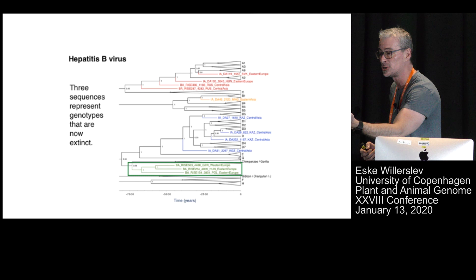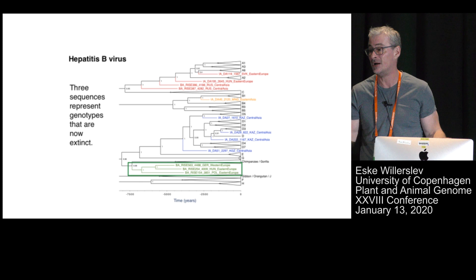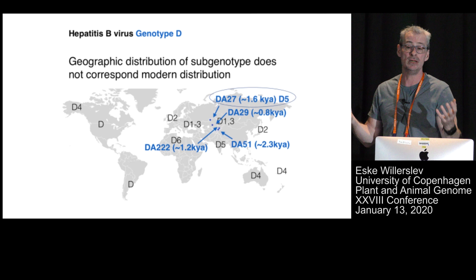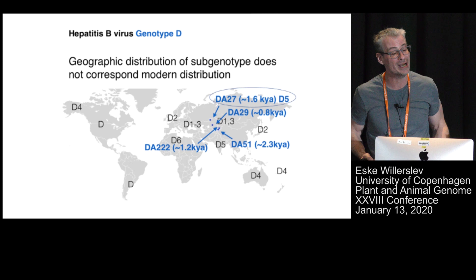What these ancient strains give us is a catalog of possible mutation routes that these pathogens could take. It gives us an opportunity to resurrect them, look at their impact in mice, and see whether present-day vaccines actually cover what might hit us in the future. Even the distribution is very different in the recent past — some genotypes we only see in northern India today were outside India back in the Bronze Age. Some of this is related to the movements of peoples I talked about previously.